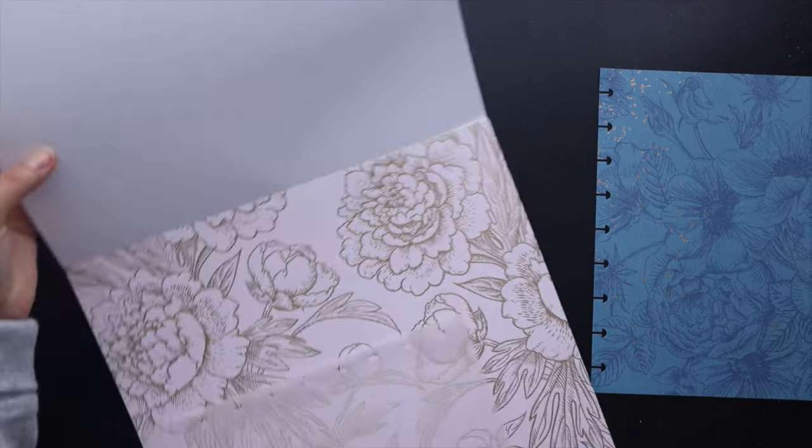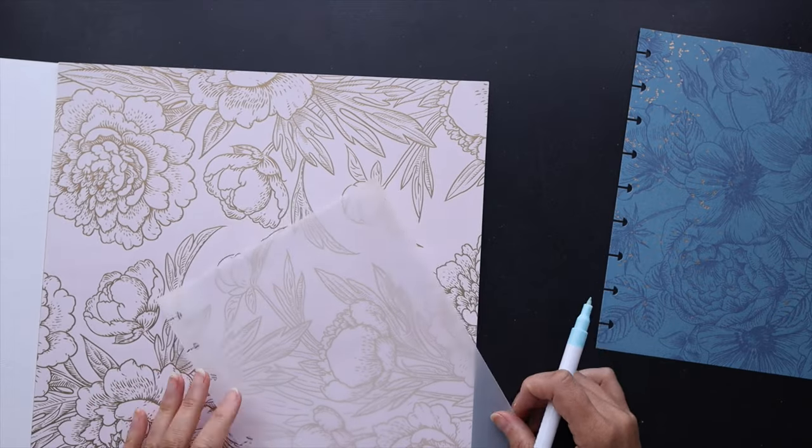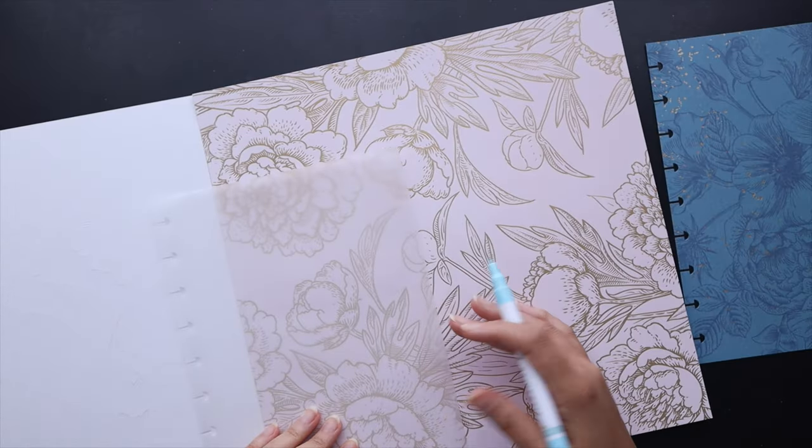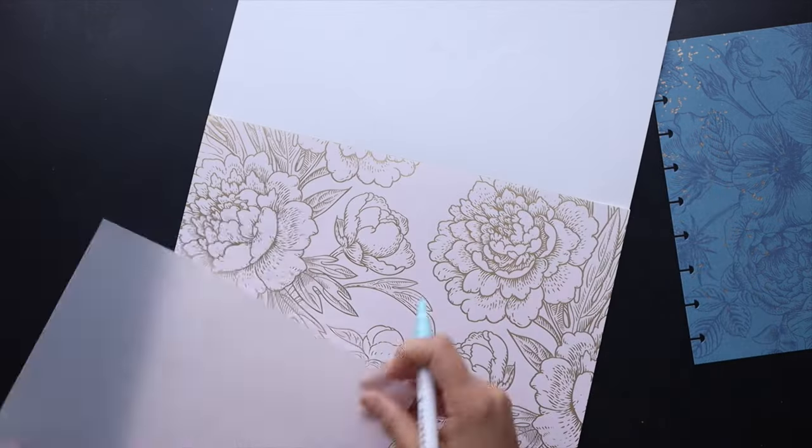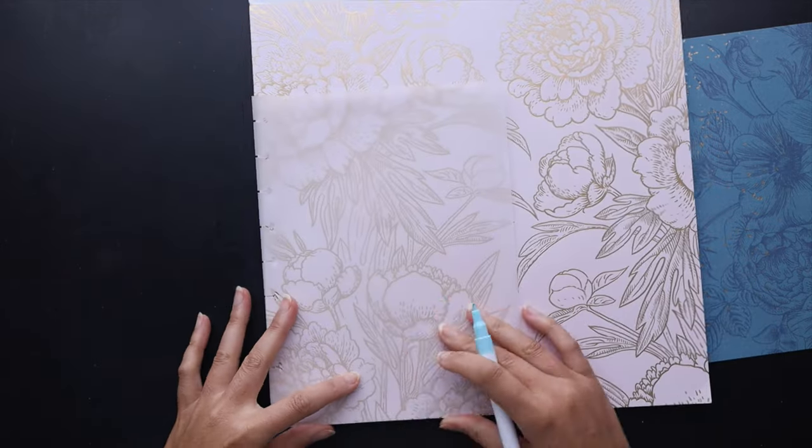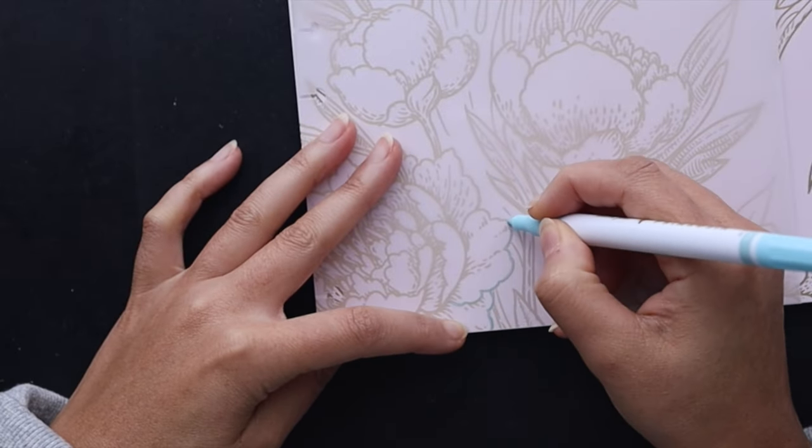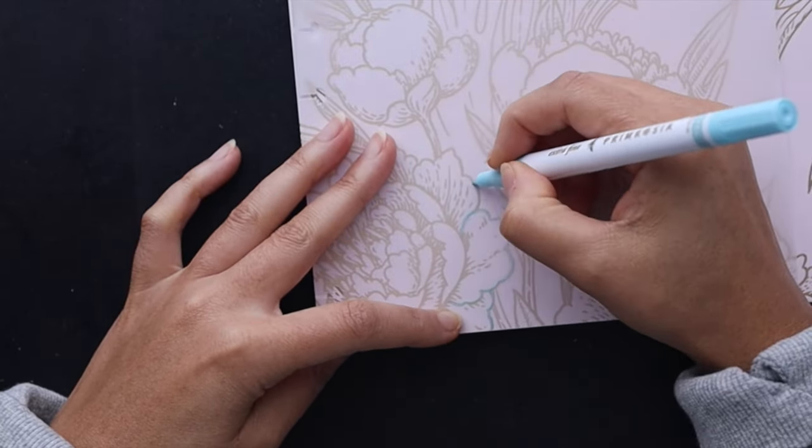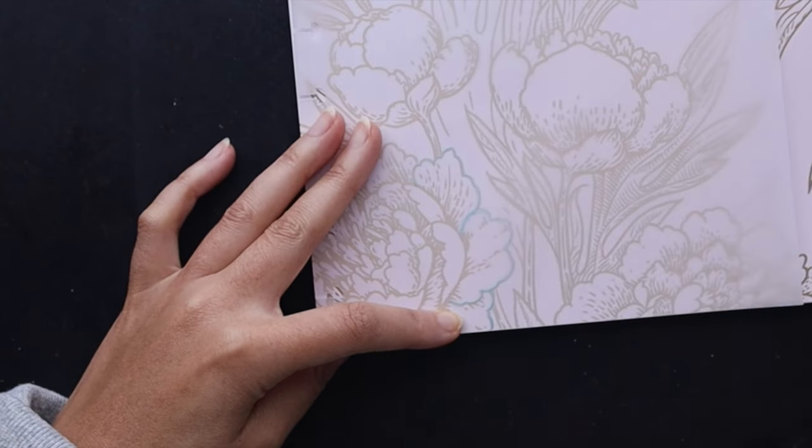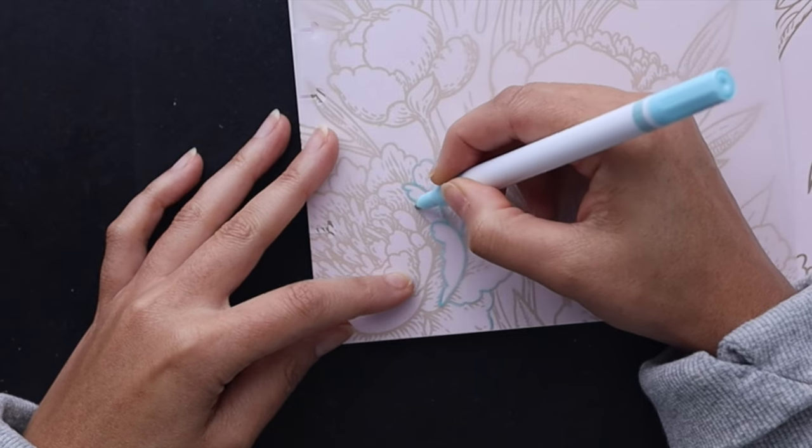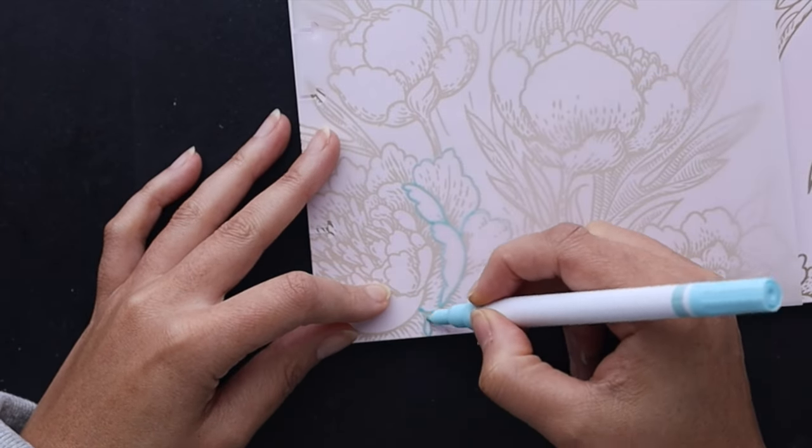So in this instance you wouldn't need any sort of print or anything you just grab some cardstock some vellum paper and these acrylic paint pens and you're ready to go. So my idea for this is to actually draw florals on top of the vellum using these acrylic paint pens. I just love how this turns out.